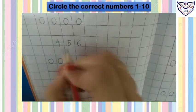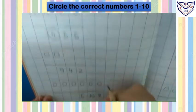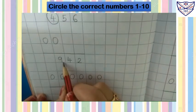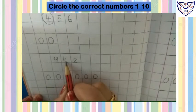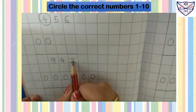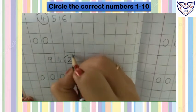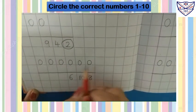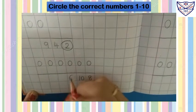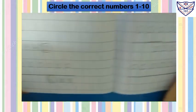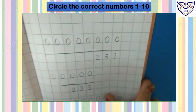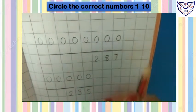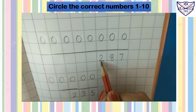Now we will circle the correct number. Count 1, 2, 3, 4, 5, 6, 7, 8, 9. Now we will circle the correct number: 1, 2, 3, 4, 5, 6, 8. Which number is this? It is 6, so we'll circle 6. Next: 1, 2, 3, 4, 5, 6, 7, 8. Which number is this? It is 2, so we'll circle 2.